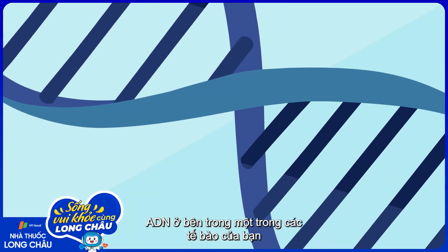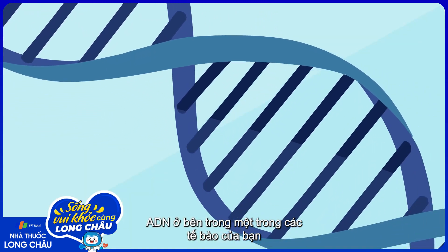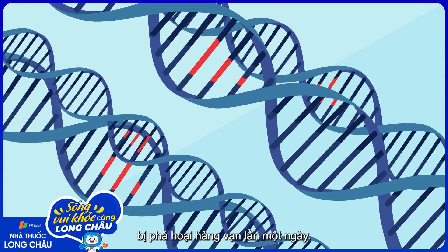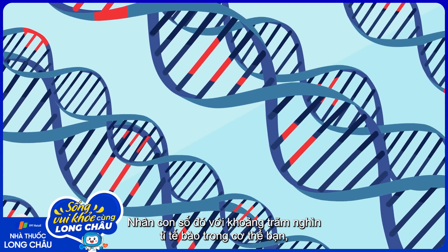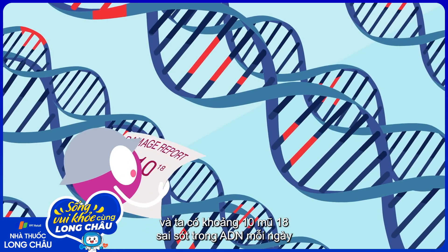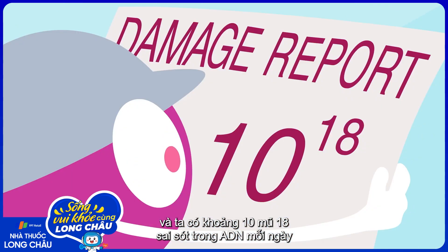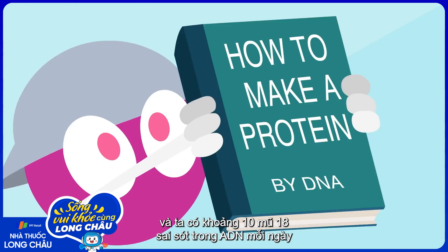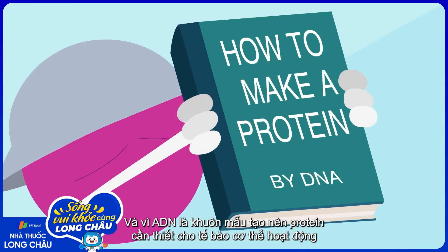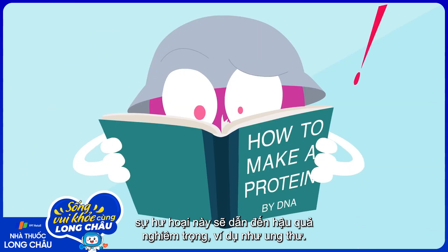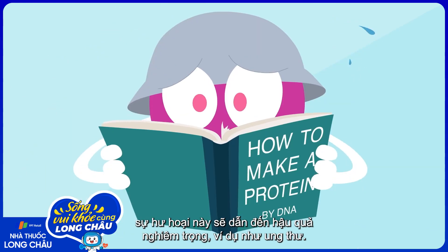The DNA in just one of your cells gets damaged tens of thousands of times per day. Multiply that by your body's hundred trillion or so cells, and you've got a quintillion DNA errors every day. And because DNA provides the blueprint for the proteins your cells need to function, damage causes serious problems, such as cancer.